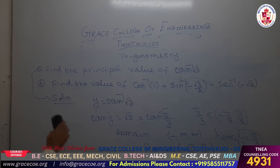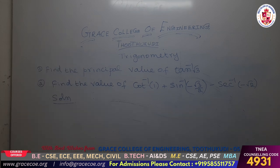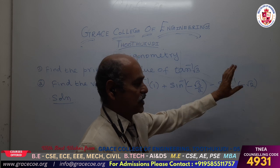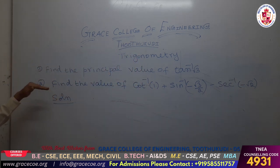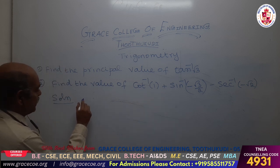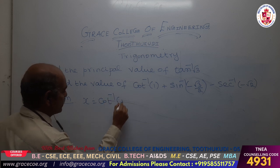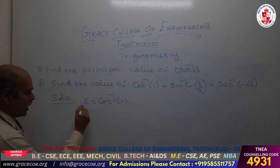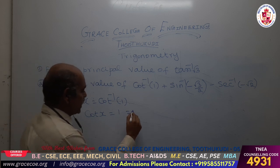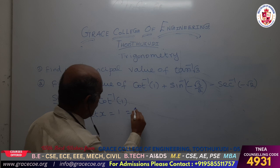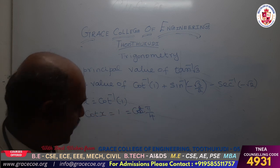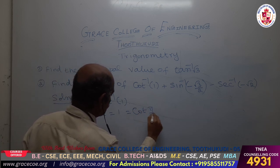Now we are going to find the solution for the second problem. We are going to find cot inverse 1 plus sin inverse of minus root 3 by 2 minus secant inverse of minus root 2. What will be the value for 1 in terms of cot? Cot inverse of 1 is nothing but cot of pi by 4, and the value of cot pi by 4 is 1.